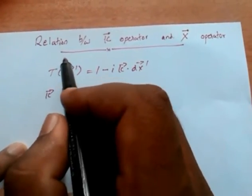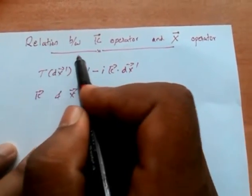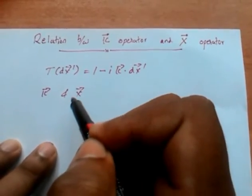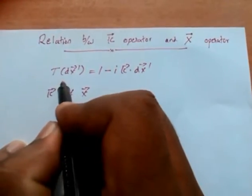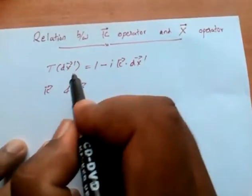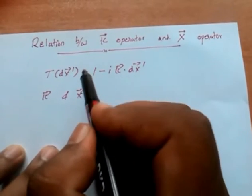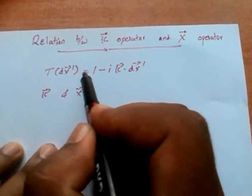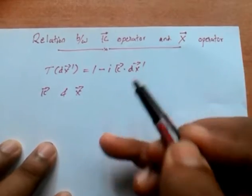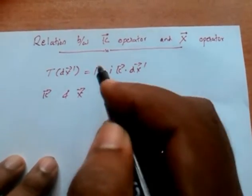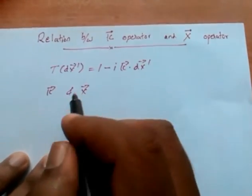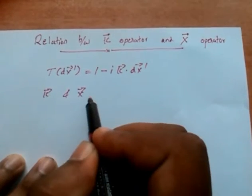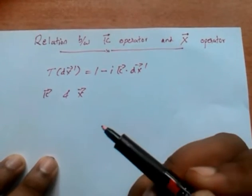In this class, we are going to discuss the relation between the k operator and the x operator. By verifying all four properties, we have accepted the form of the infinitesimal translation operator as T(dx') equal to 1 minus ik·dx'. Now is the time to derive an extremely fundamental relation between the k operator and the x operator.